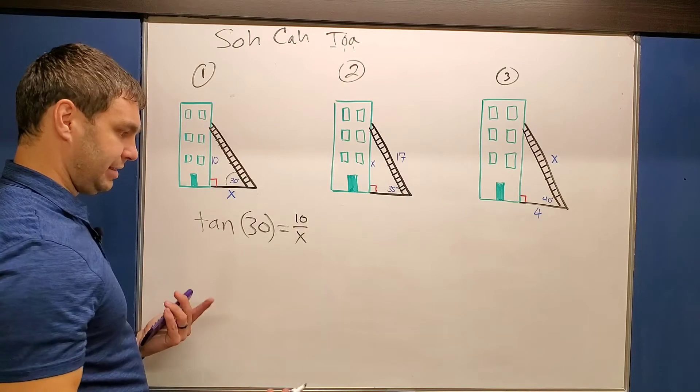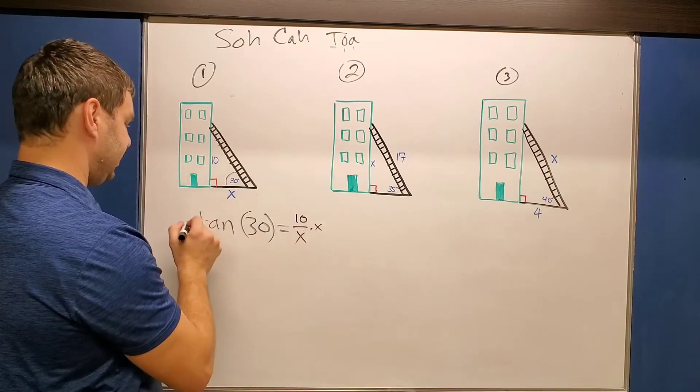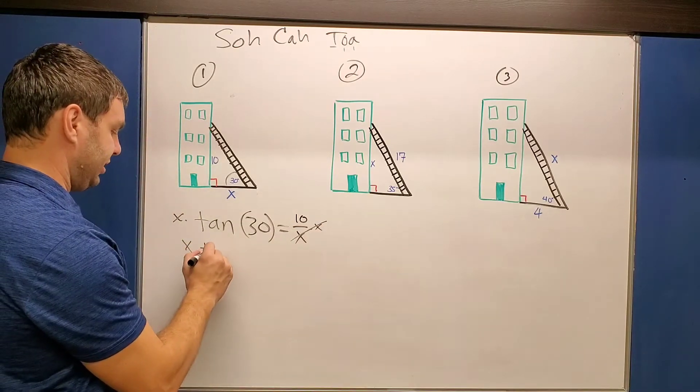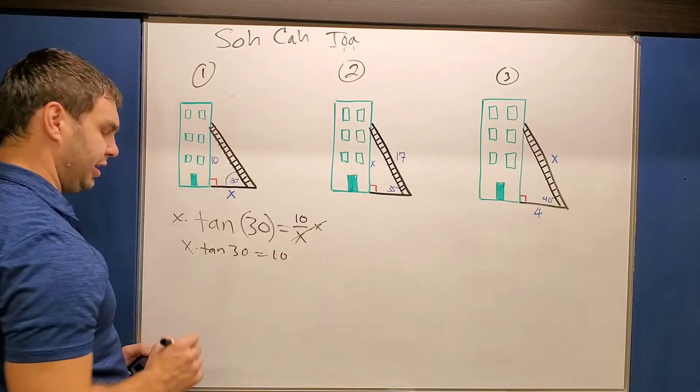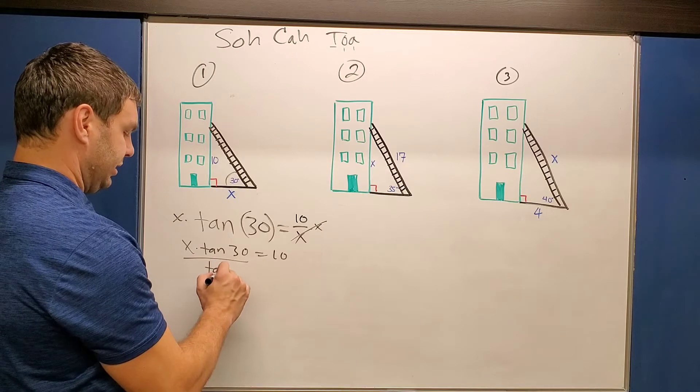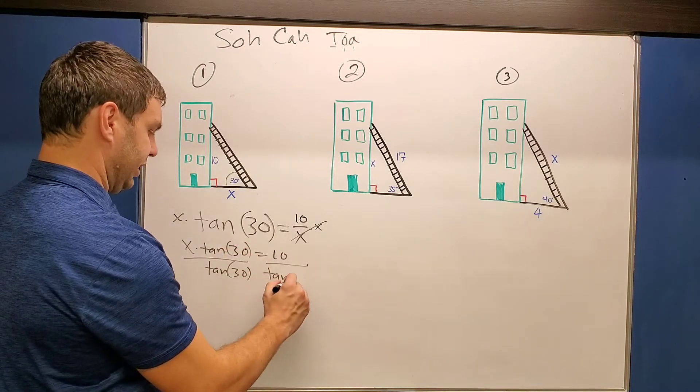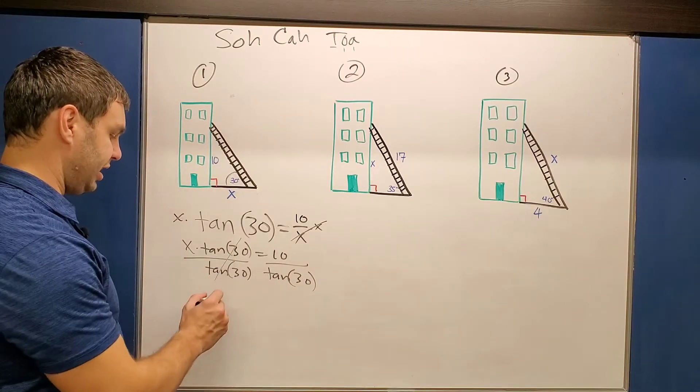So tangent of 30 equals 10 over X. The X is in the denominator. This typically takes the longest, to multiply both sides times X. Those cancel now, and now I have X times tangent of 30 equals 10. To get the X by itself, if it's currently being multiplied by tangent of 30, I need to divide by tangent of 30, parentheses around those. And what this does for me is it cancels the tangents and gives me just X on the left side.